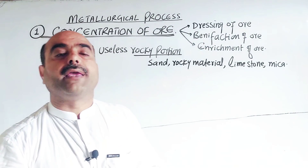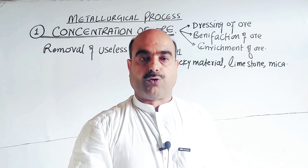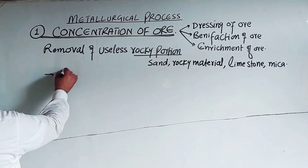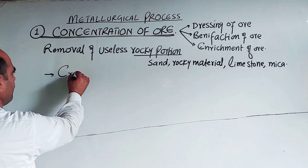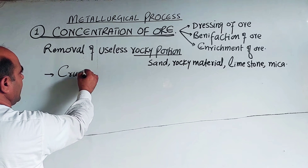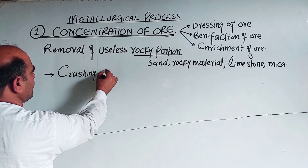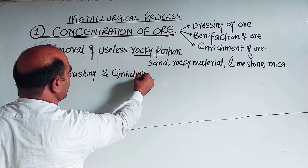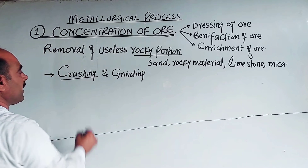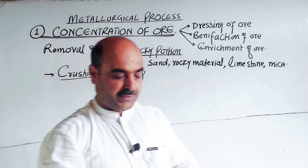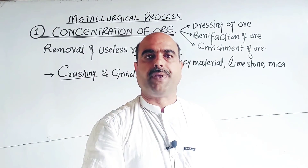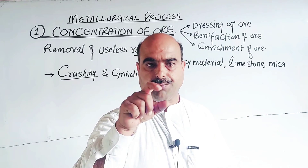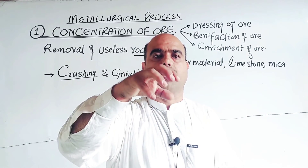The first method is crushing and grinding. Crushing means the conversion of large pieces of ore into small pieces using crushing machines.